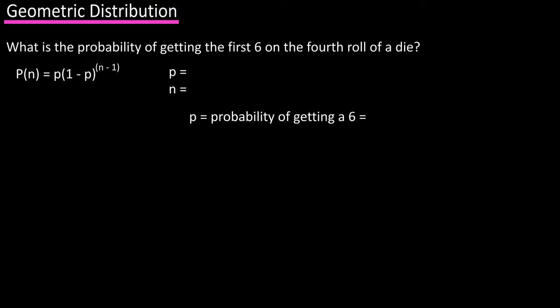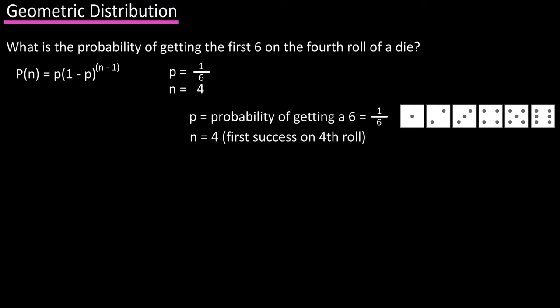Small p is the probability of getting a six, which is one over six, as there are six possible outcomes on a die roll. And n is equal to four, because we're looking for the first success, getting a six, on the fourth roll of the die.